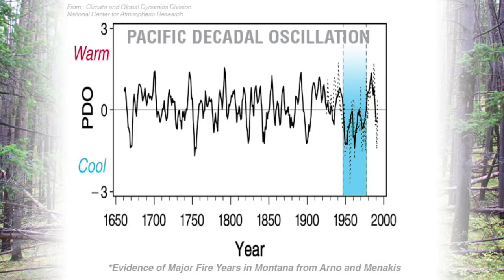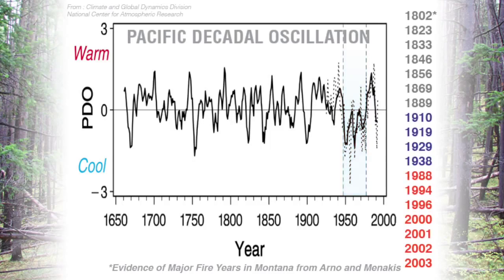When a separate data set looking at extreme fire years is superimposed on this graph, the years 1802 through 2003 were determined to be extreme fire years based on fire scars occurring on trees across the entire northwestern United States. In 1802, forests in Montana, Idaho, Oregon, and Washington all burned, indicating it was a really bad fire year. The years 2000 through 2003 are also on this data set because those were years when much of the Northwest supported large landscape-level wildfires.